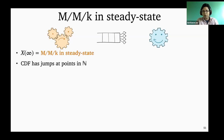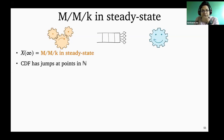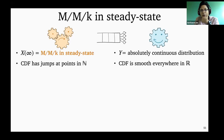One thing we do know is that the distribution has support in the natural numbers. So if I looked at the CDF of x infinity, I know this would be a step function with jumps at each of the natural numbers. Maybe you decide that you don't like working with discrete distributions with these sort of step functions in the CDF. So maybe it would be nice to approximate the steady state distribution with something continuous that has a PDF and a smooth CDF.